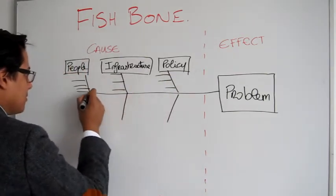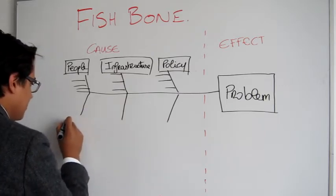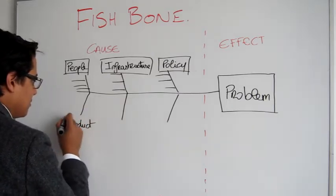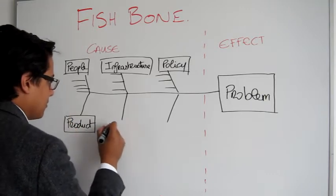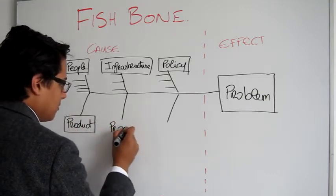And you can also drill deeper by asking why five times. For example, why do we have too many approvals? Because we don't trust the data.